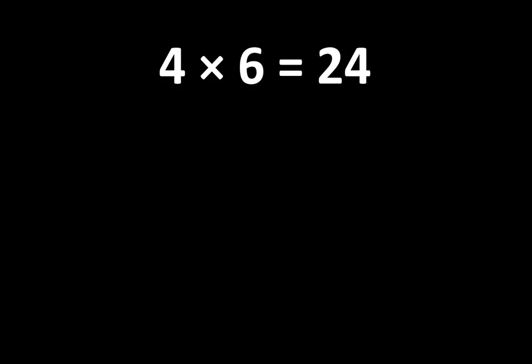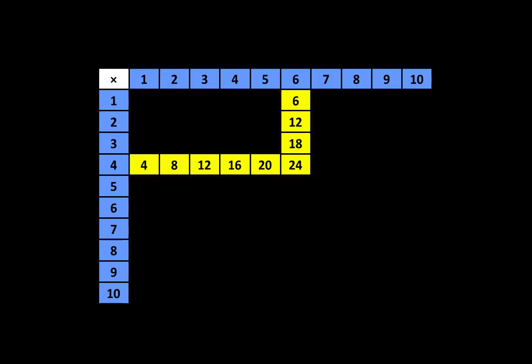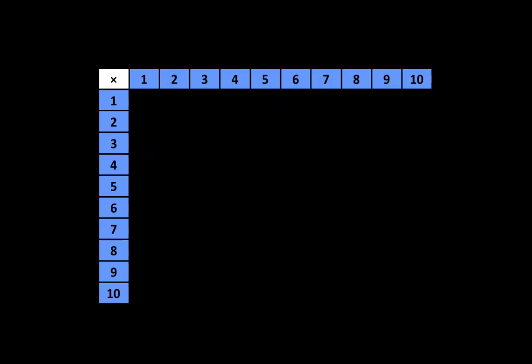4 times 6 is equal to 24, and there are many more important ideas. When we look on the multiplication table, we can see that 4 times 6 is equal to 24. 24 is a multiple of 4, and 24 is also a multiple of 6. In fact, if you look closely, you'll find another connection.